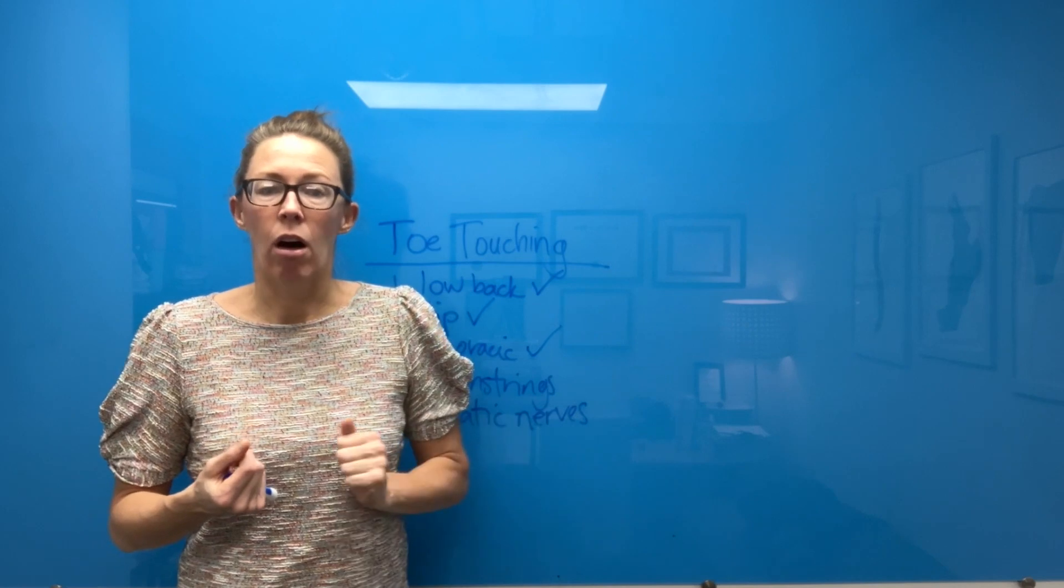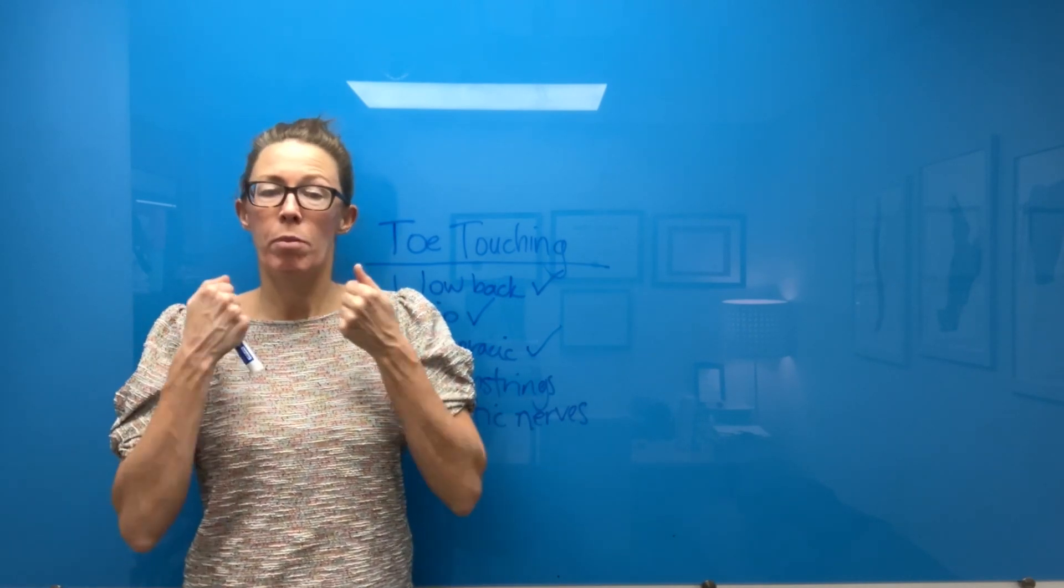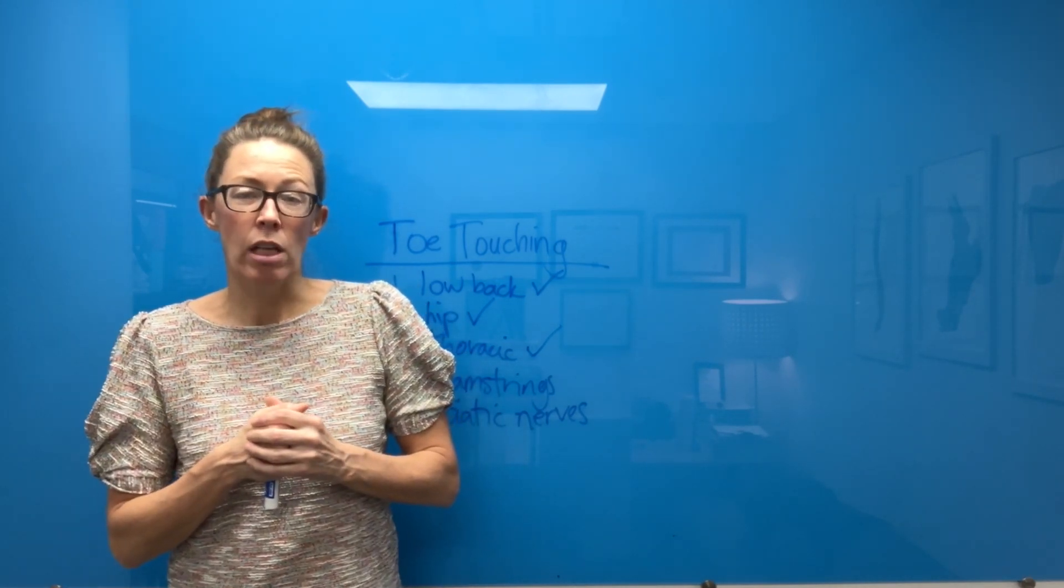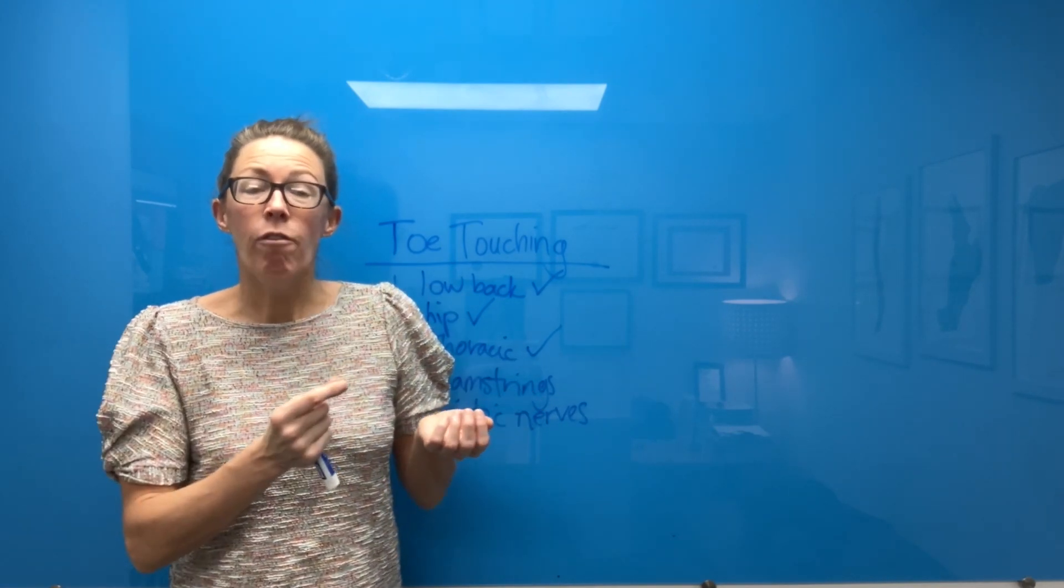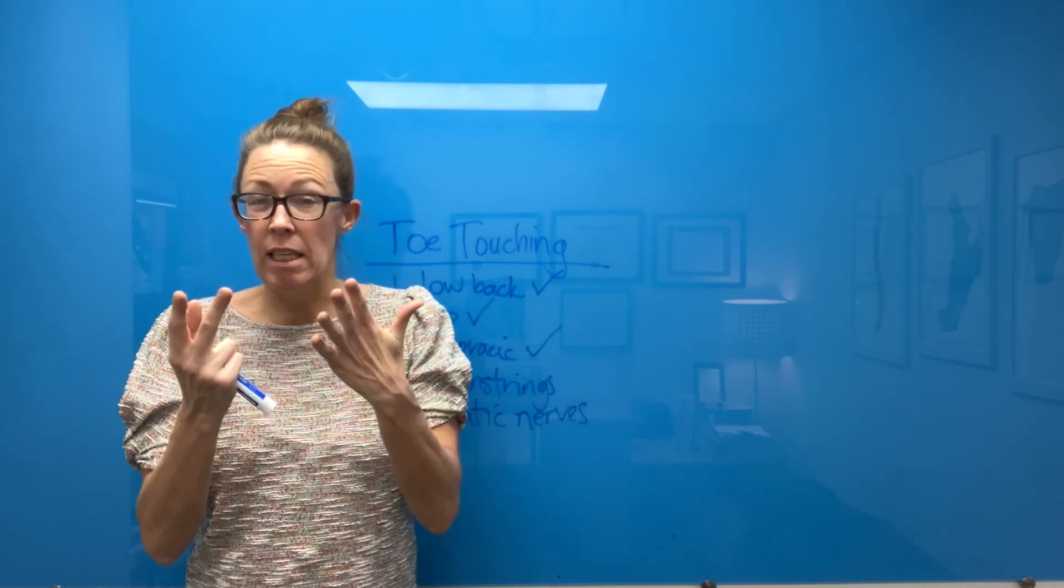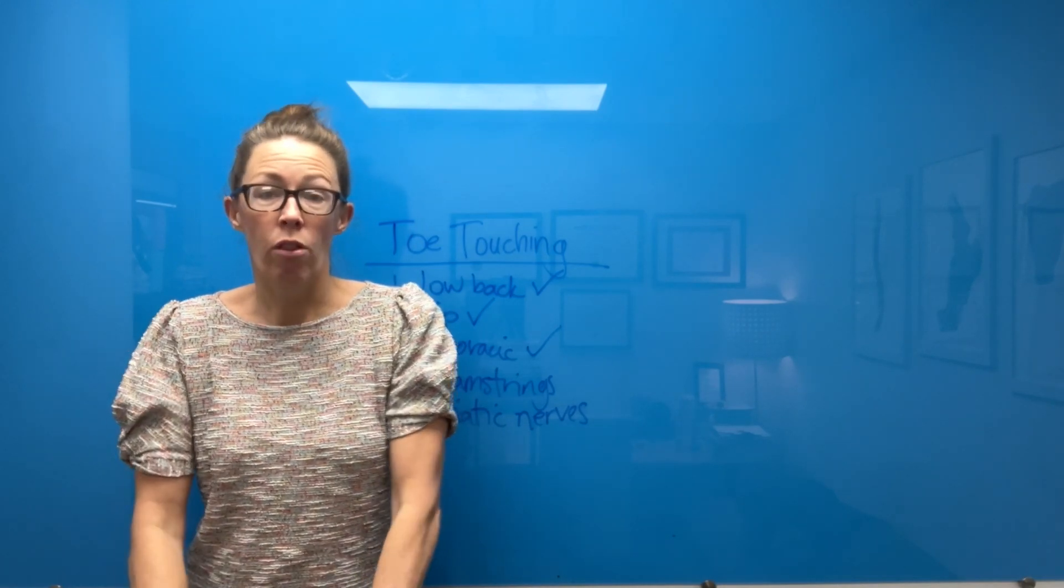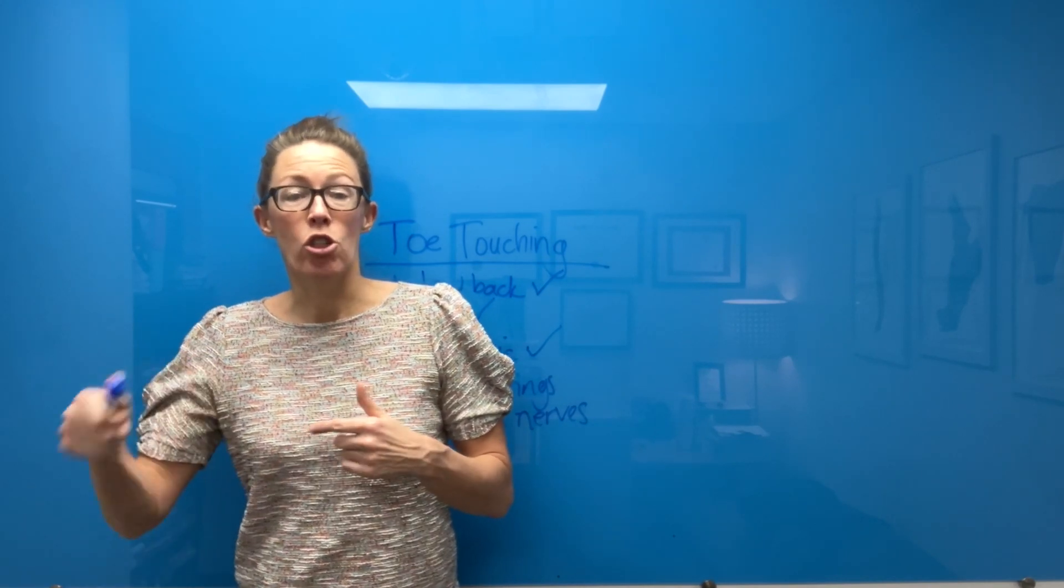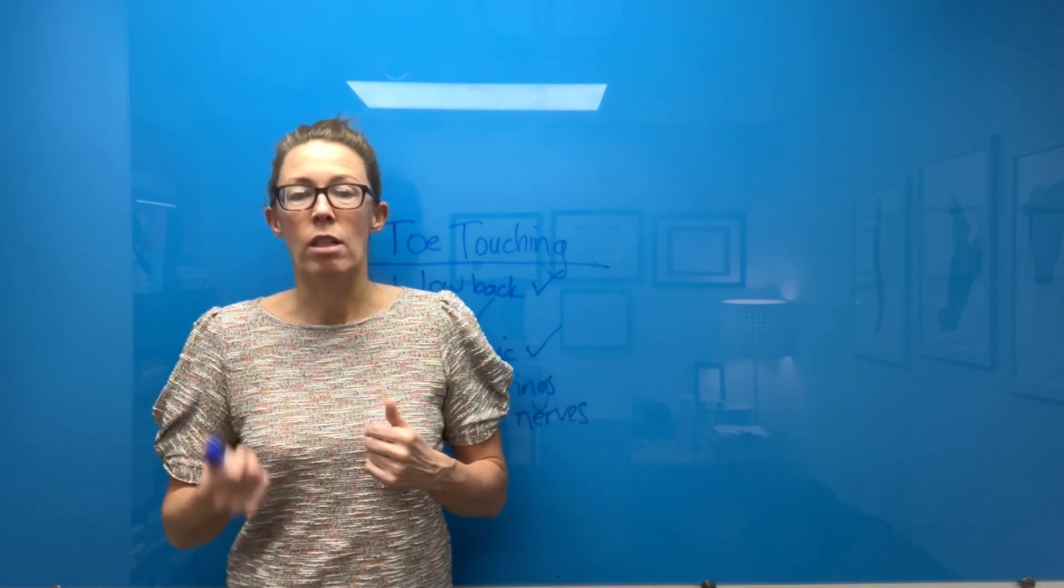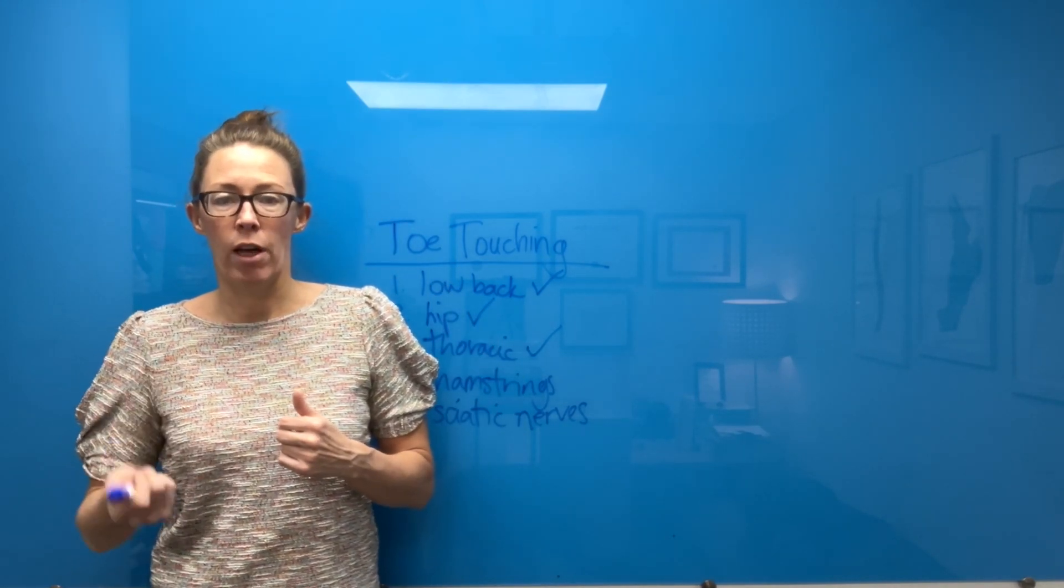And we can test the low back in supine by having people bring their knees to their chest. But because I can't really see how far that goes, and I can see where the hands reach on the legs going down with the legs straight, it's easier for me to measure for change in the toe touching standing version of low back flexion.